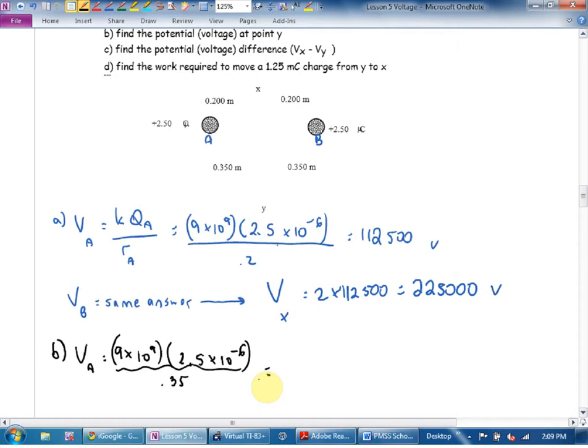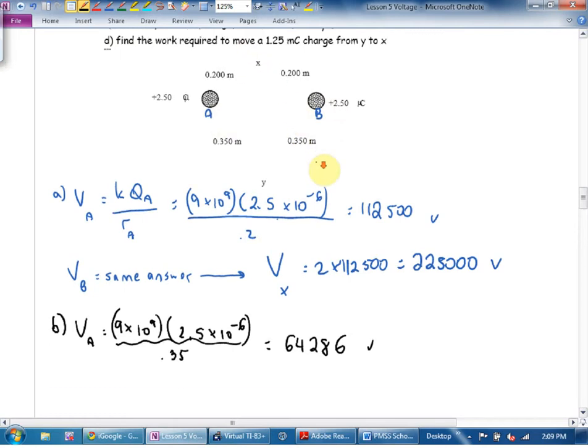Units? Volts? And that's the voltage from A. Aaron, does charge B have the same charge as charge A? Is the distance the same? Then you know what? The voltage from B is going to be identical to the voltage from A. So I'm just going to write voltage B equals same answer.